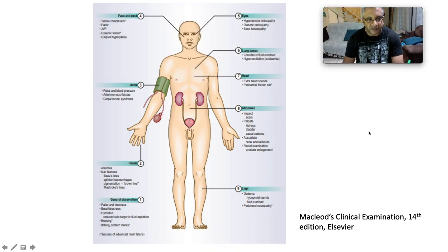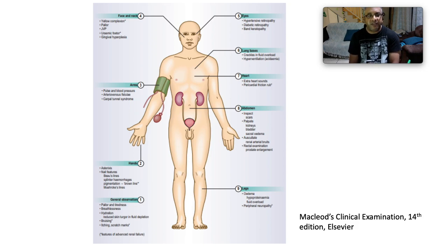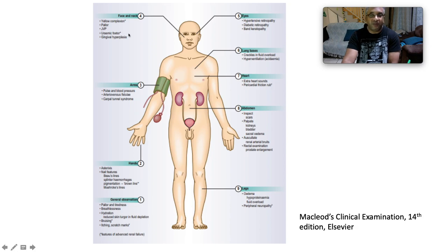When examining the renal system, observe generally for pallor, fatigue, breathlessness, and assess hydration — looking for reduced skin turgor or fluid depletion, bruising, itching, and scratch marks. In the hands, look for asterixis — remember its differentials include renal failure, respiratory failure, and hepatic failure. In the nails, note Beau's lines, splinter hemorrhages, pigmentation, and Muehrcke's lines. In the arms, take pulse and blood pressure, look for AV fistula and carpal tunnel syndrome. In the face and neck, look for sallow complexion, pallor, check the JVP, and smell for uraemic fetor — though this has fallen out of favor due to COVID transmission risk.